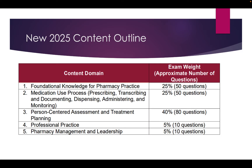The five domains in the new content outline are: foundational knowledge for pharmacy practice, medication use process, patient or person-centered assessment and treatment planning, professional practice, and pharmacy management and leadership. You can see the percentages outlined here.